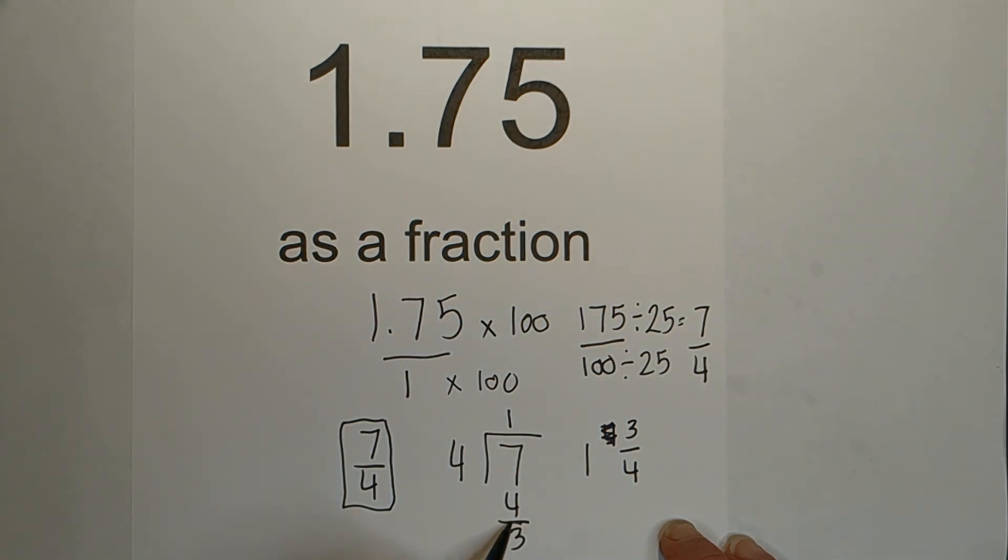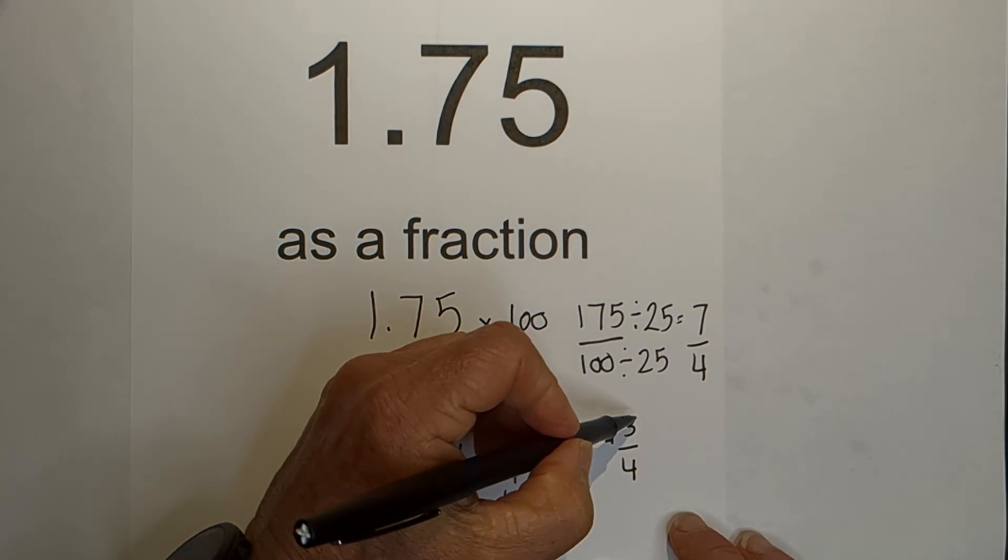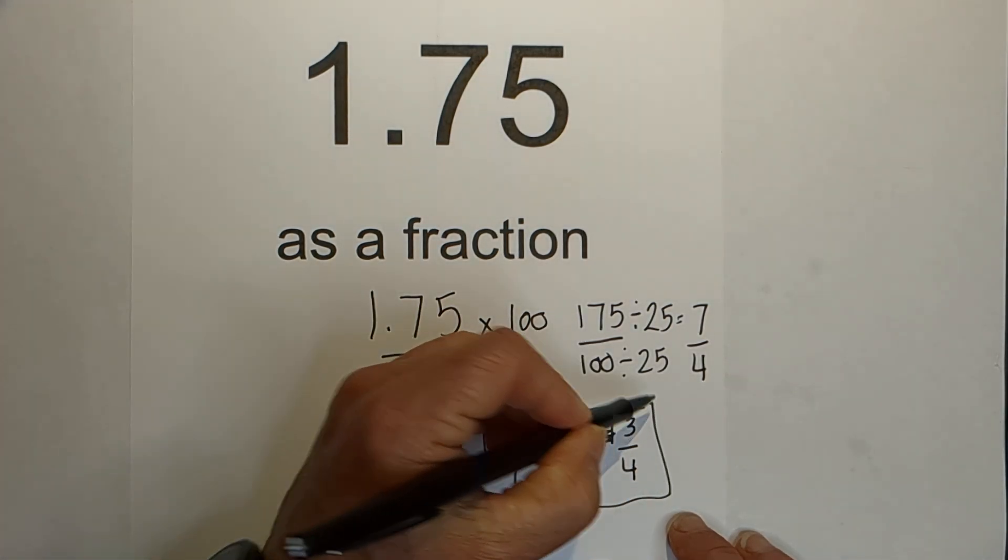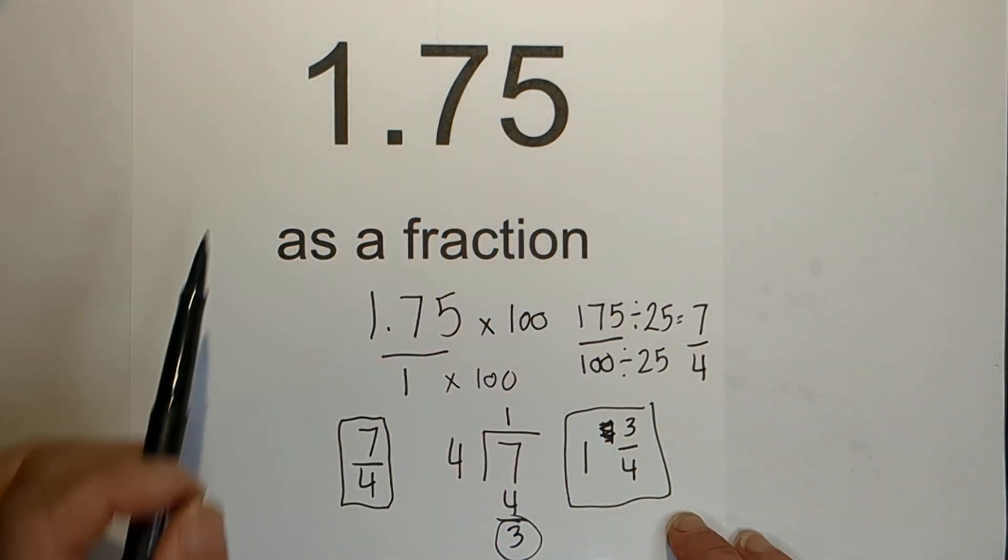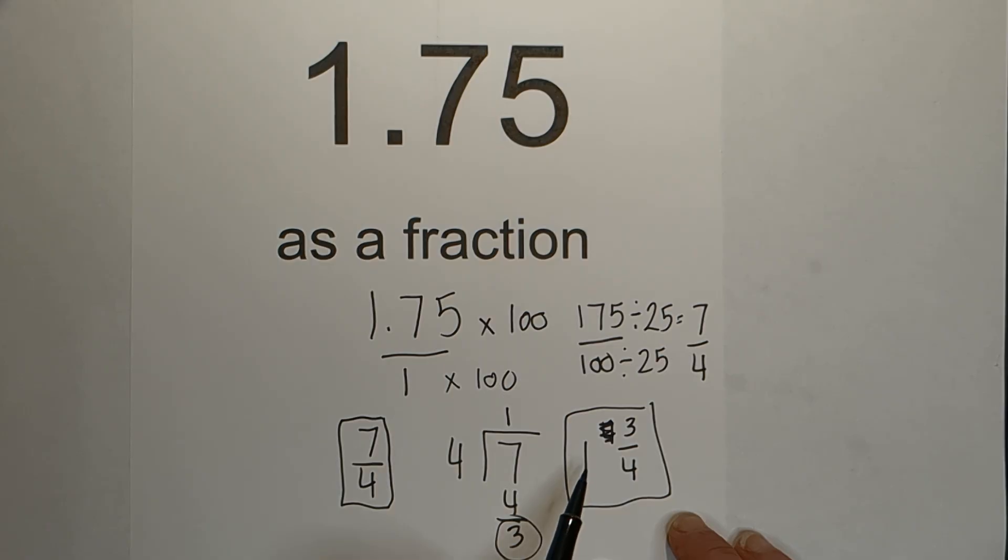Sorry about that. It's the 3 here. So there we go. As a fraction, 1.75 is 7 fourths, and as a mixed number, it's 1 and 3 fourths. Thanks for watching.